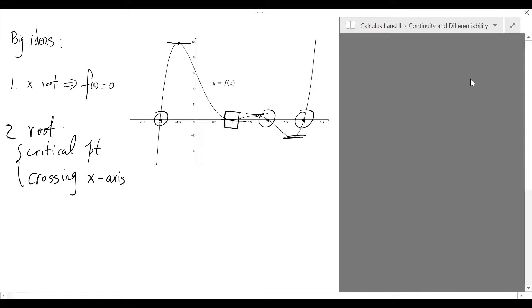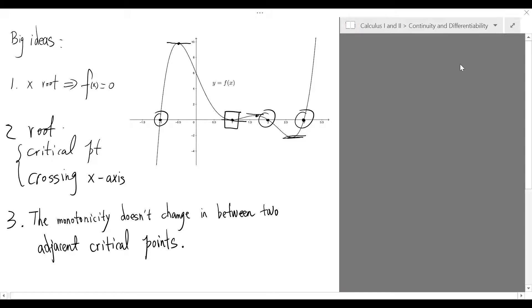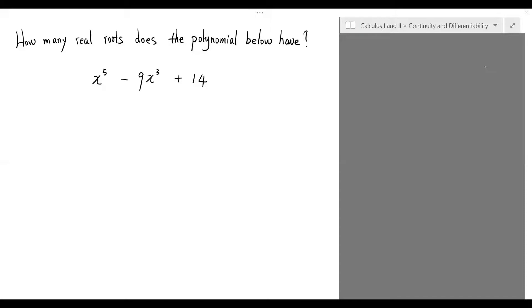With these observations at hand, let's get started figuring out an answer for our question. Since the critical points of this polynomial will serve as the anchor in our search for roots, our first task is to compute all critical points of this polynomial. Hence, step one: finding the critical points.